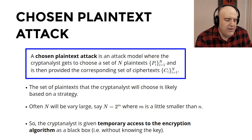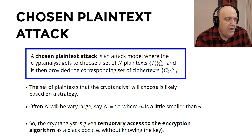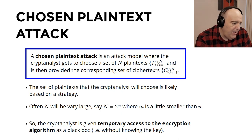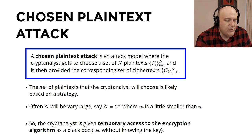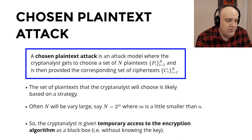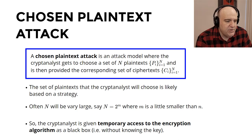A chosen plaintext attack is similar, but the cryptanalyst gets to choose n plaintexts Pᵢ and is then provided the corresponding ciphertexts Cᵢ. The plaintexts are usually chosen with a strategy, and n is likely very large. In this scenario, the cryptanalyst is given temporary access to the encryption algorithm as a black box — he provides n plaintexts, those are fed into the encryption algorithm, and he receives the n ciphertexts.